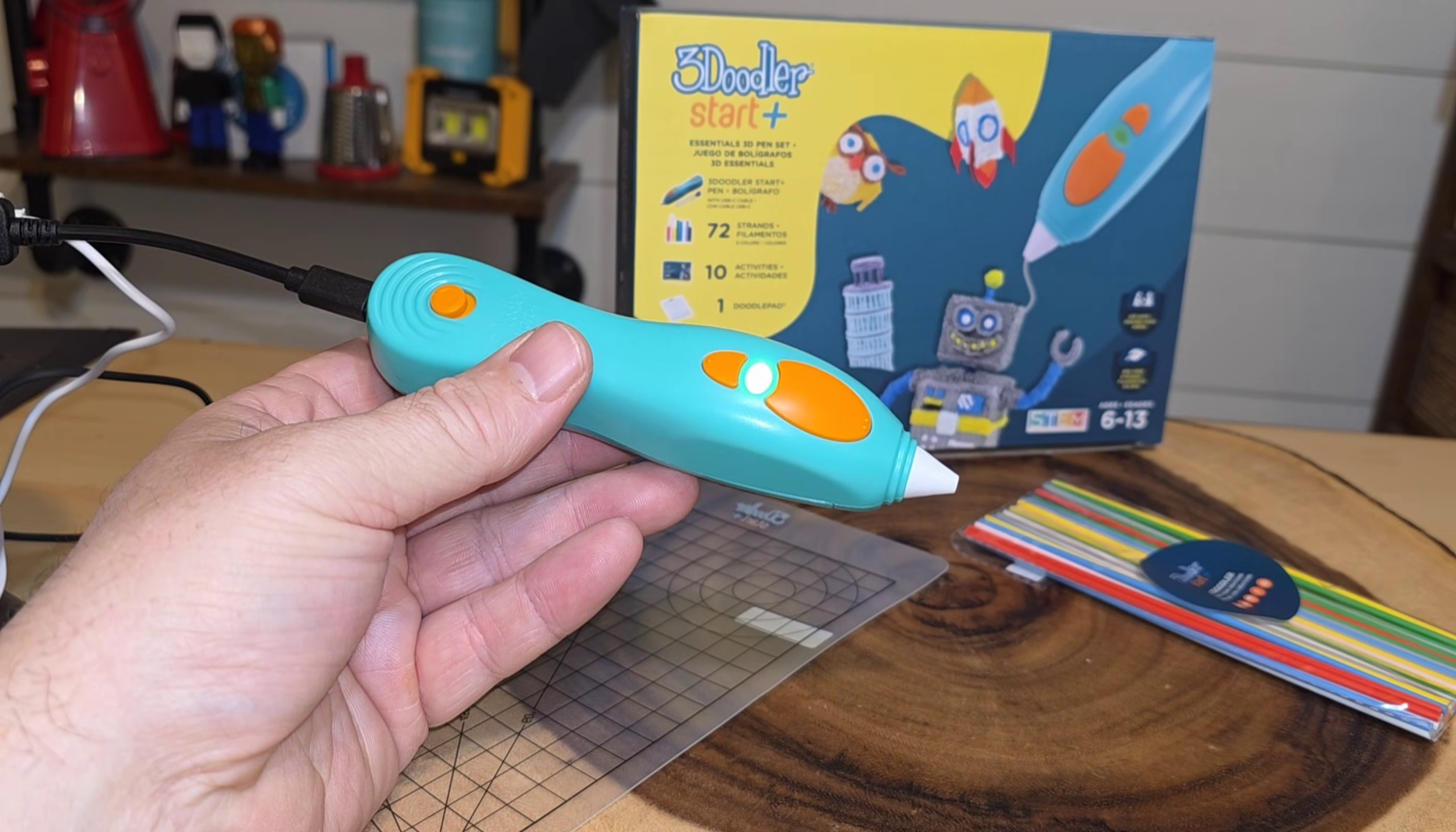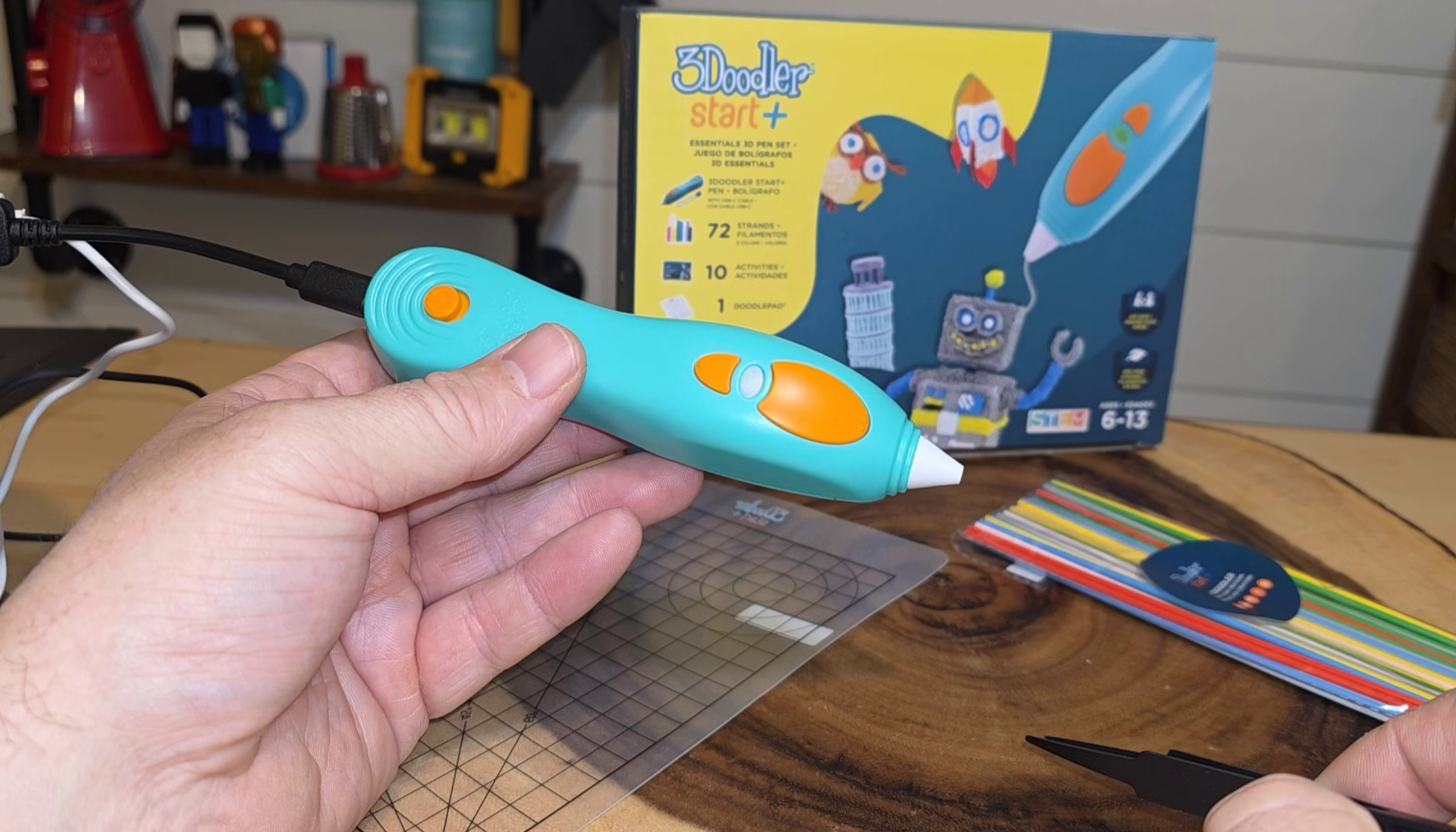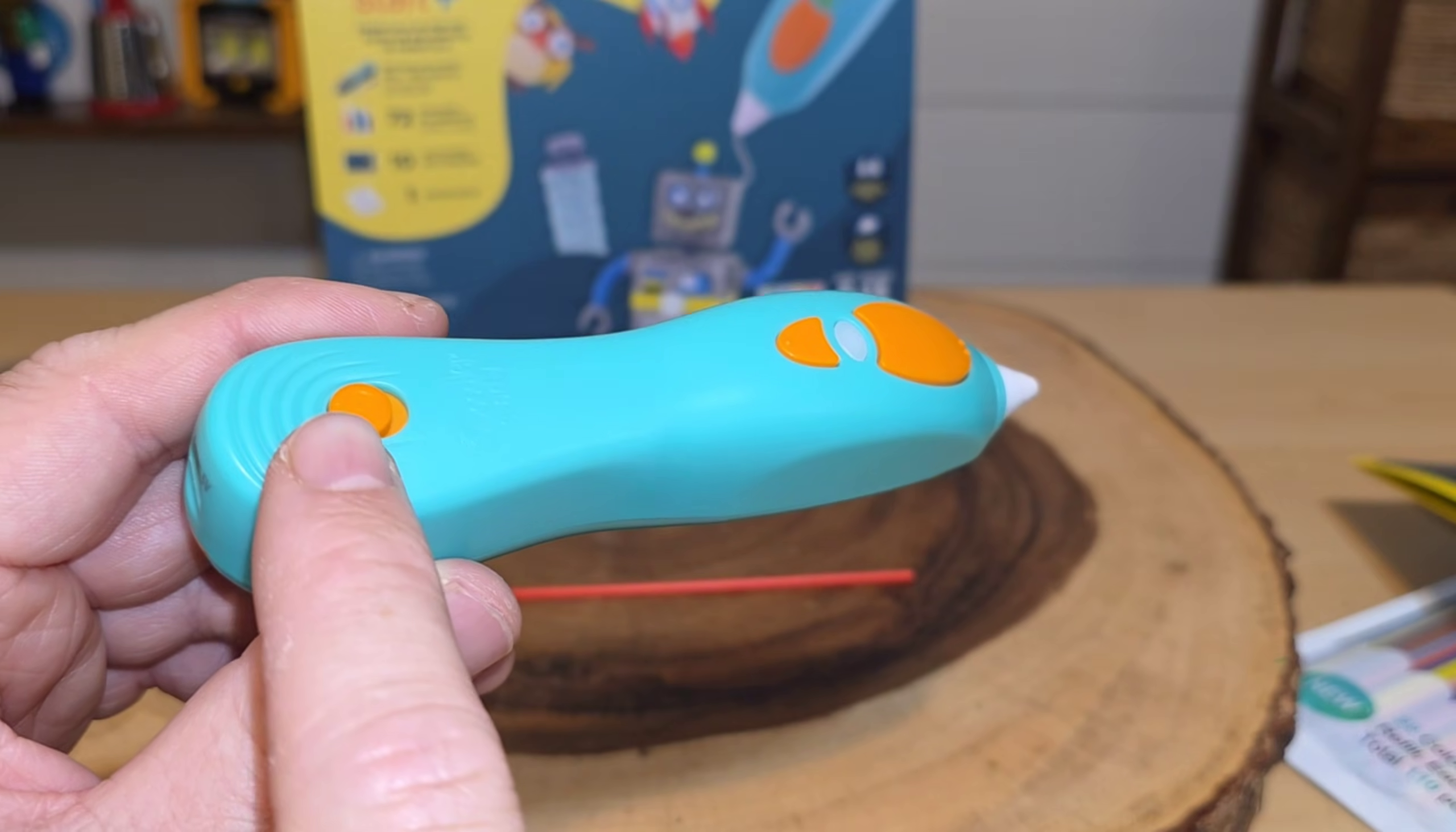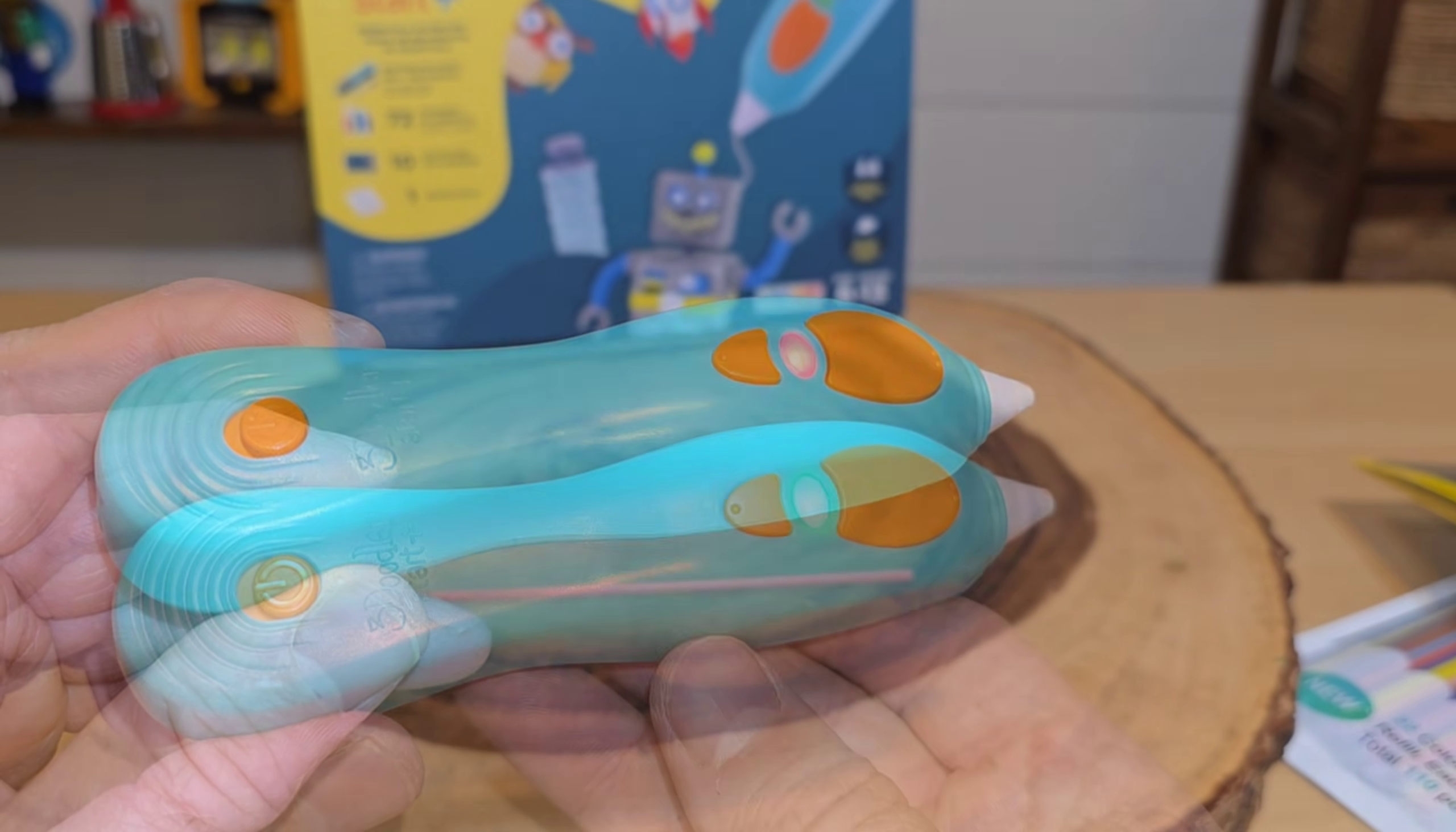With our 3D pen plugged in charging, you can see that it sort of blinks this orangish yellowish color while it's charging. When it's done charging, that should be a solid green. The light on our pen is now a solid green, indicating that we are completely charged. Now that we're charged, let's start the process. Turn it on, you're going to see that this LED turns red. We want that to be green to let us know that we are officially ready. That was really quick.